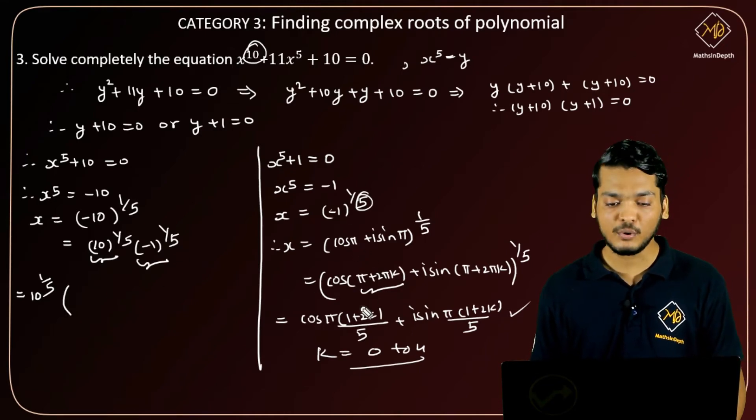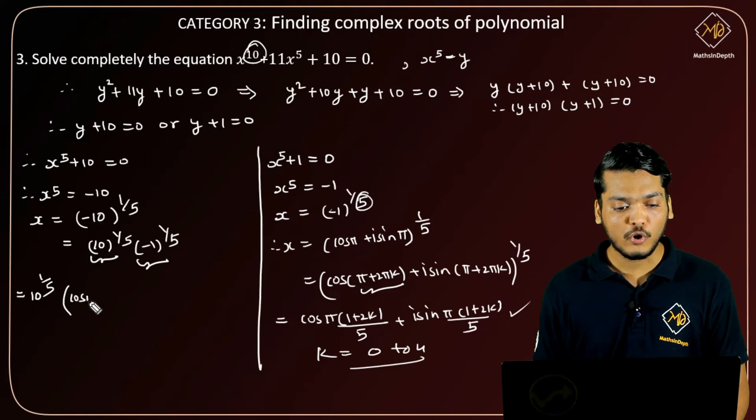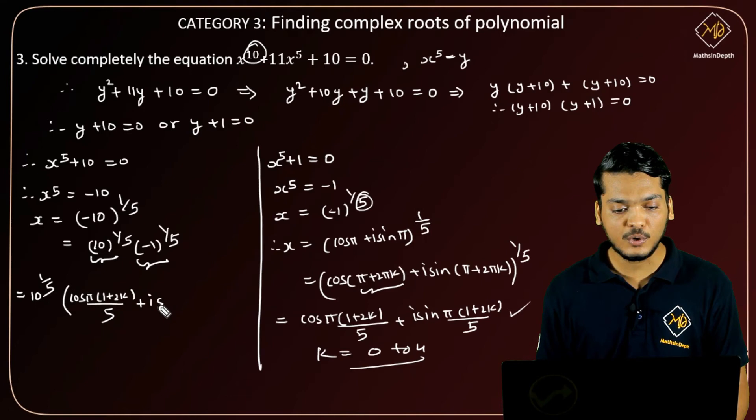So 10^(1/5) × (-1)^(1/5) equals 10^(1/5) × [cos(π(1+2k)/5) + i sin